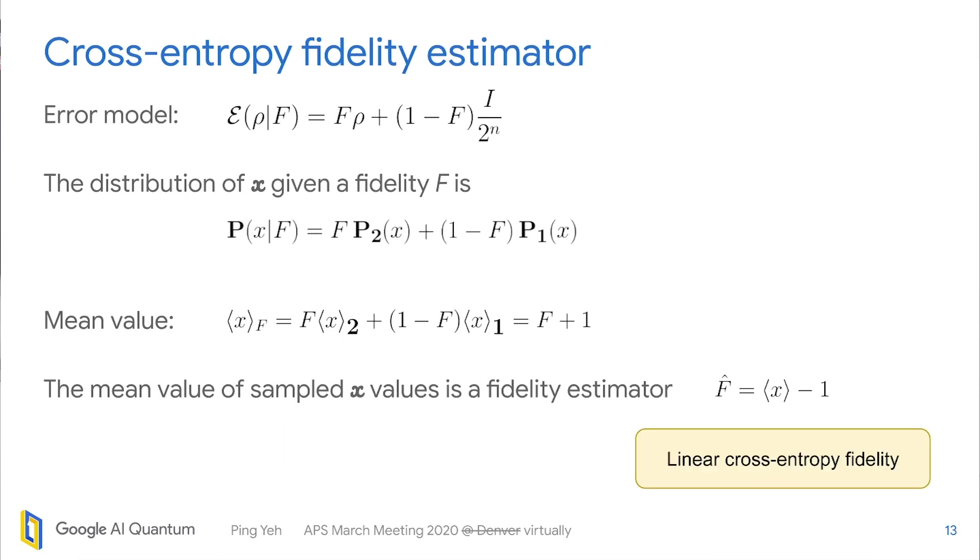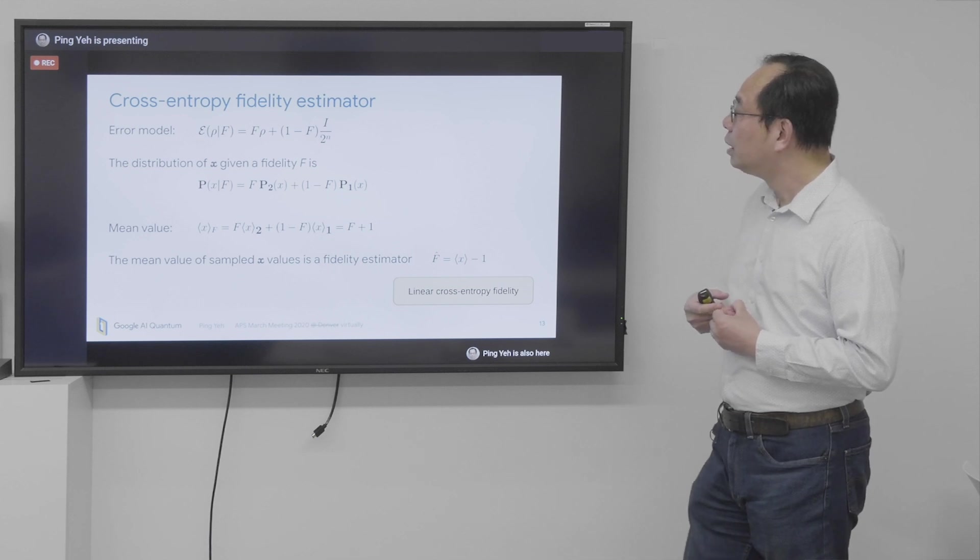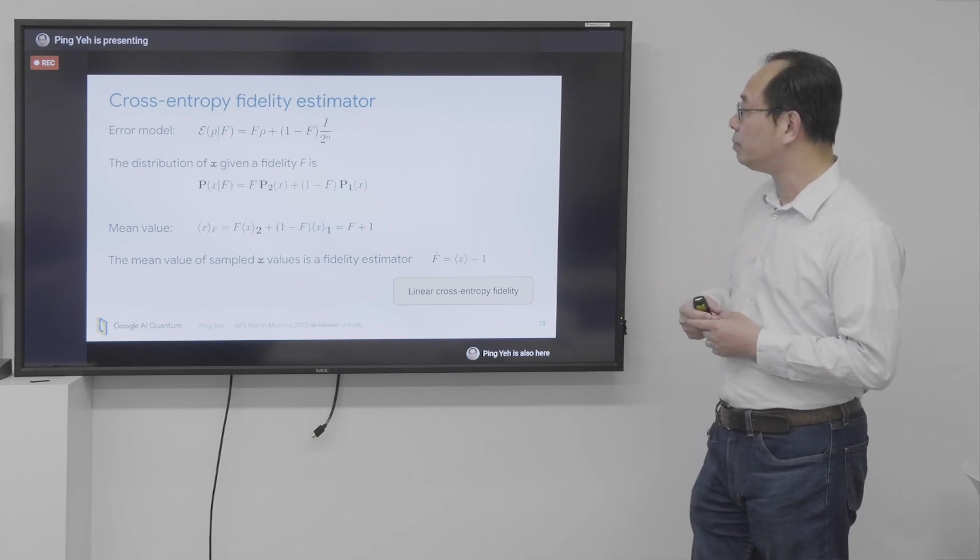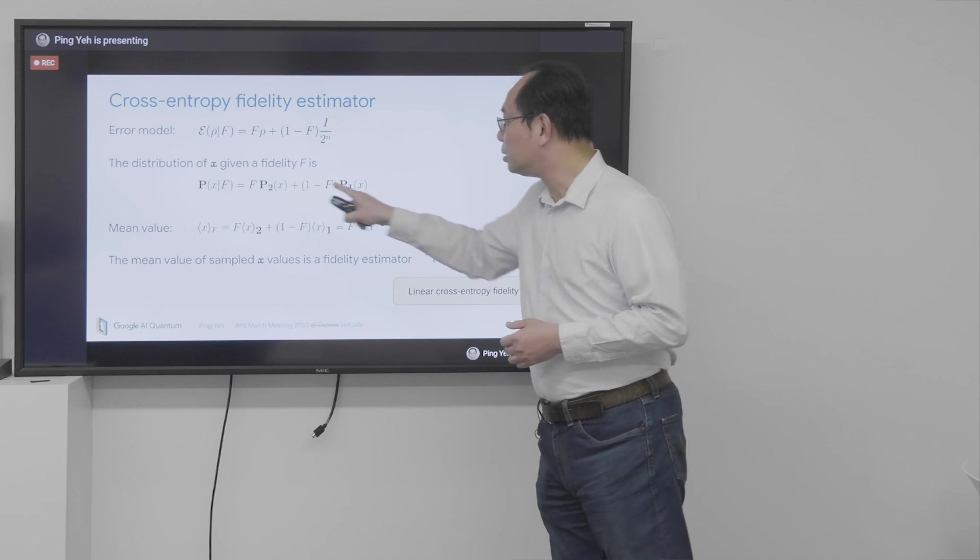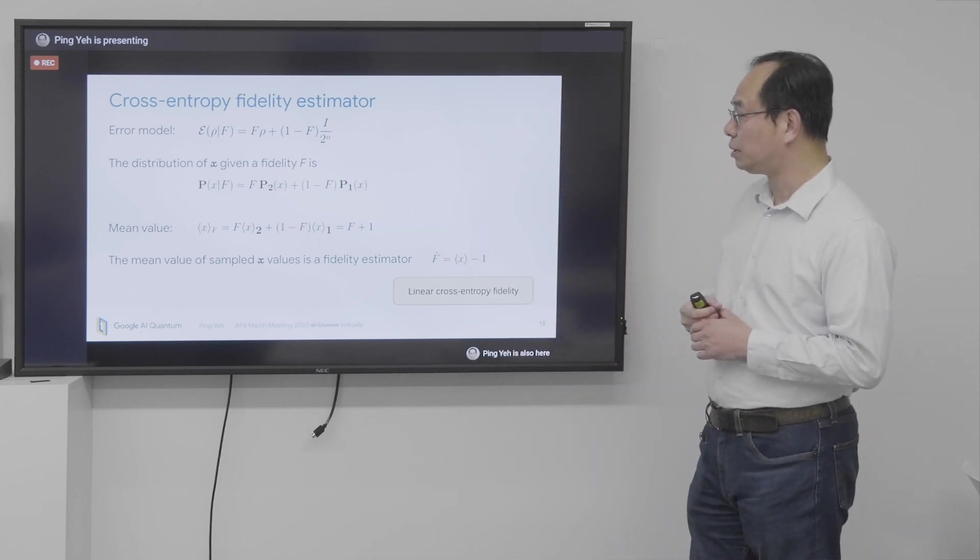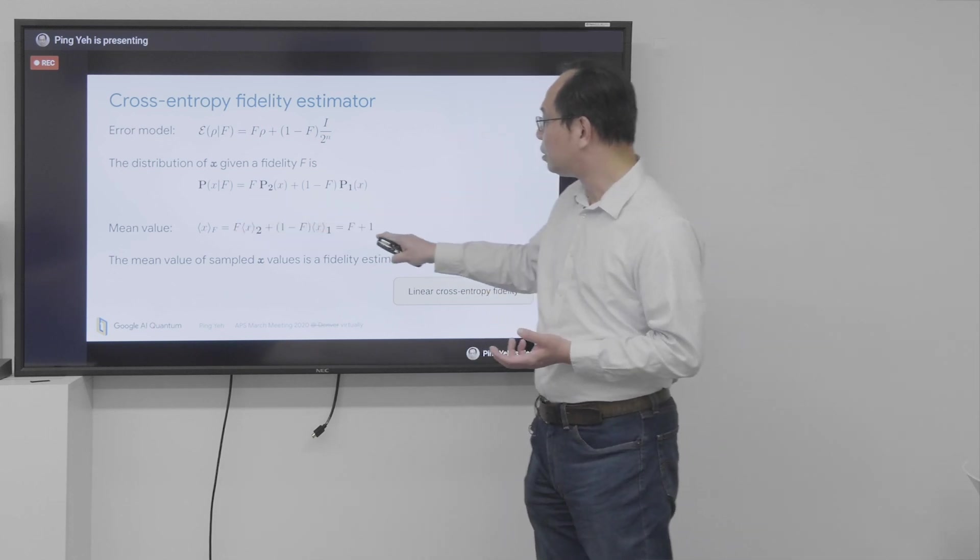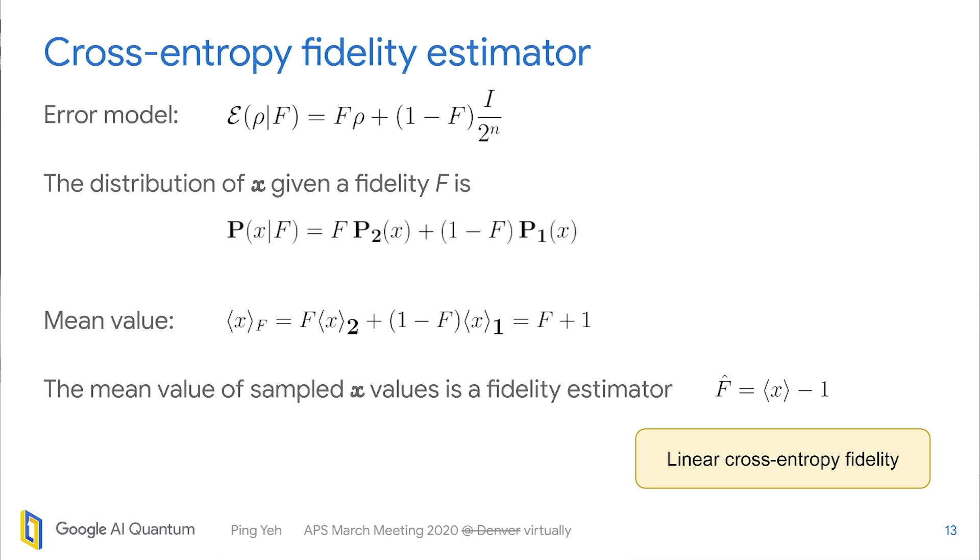And this comes in very handy when we want to estimate fidelity. So we have an error model, which is a linear combination of the perfect density matrix and totally random matrix. So the corresponding distribution of the scaled probability goes like this. It's also a linear combination of the two distributions. And if we want to measure or we can calculate the mean value out of this distribution, you can find out it's actually just very simple. It's F plus 1. So that means that the mean value of the measured x is a fidelity estimator. And this is our so-called linear cross-entropy fidelity formula.